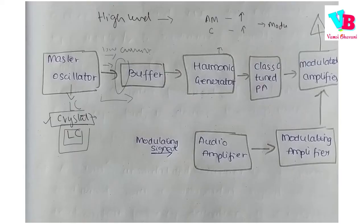Here we have a Modulator. The modulating signal is the message signal, which is amplified. Here we combine the carrier and the message signal. These two different signals are modulated together. Then the output goes to an antenna for transmission. In High Level, the carrier is amplified separately and modulation occurs at the final high-power stage.